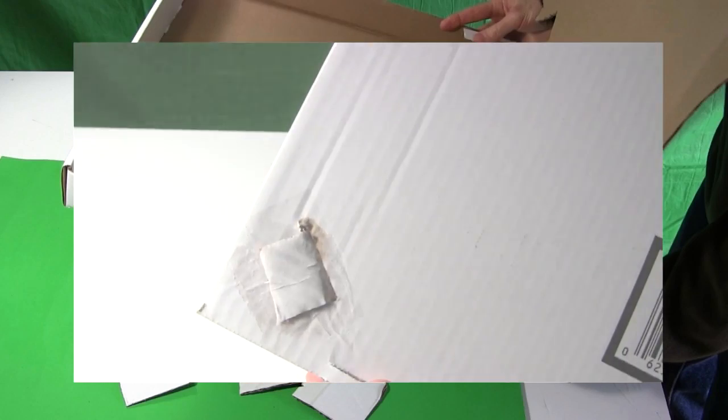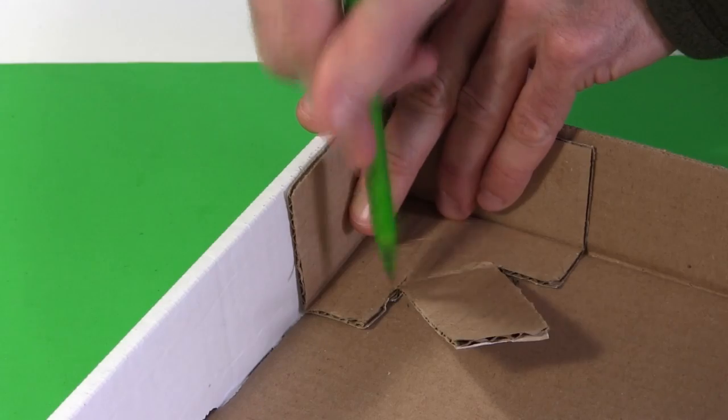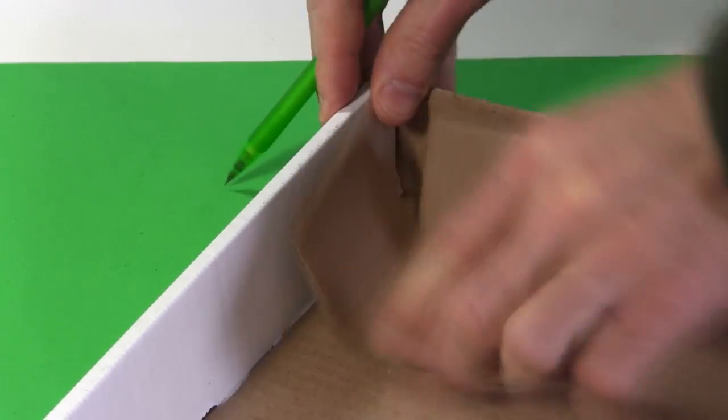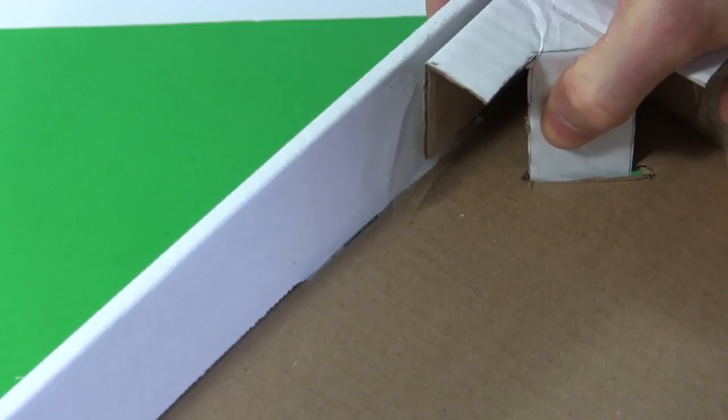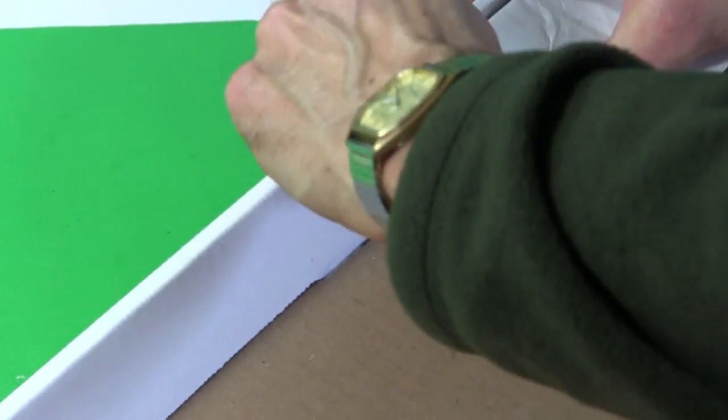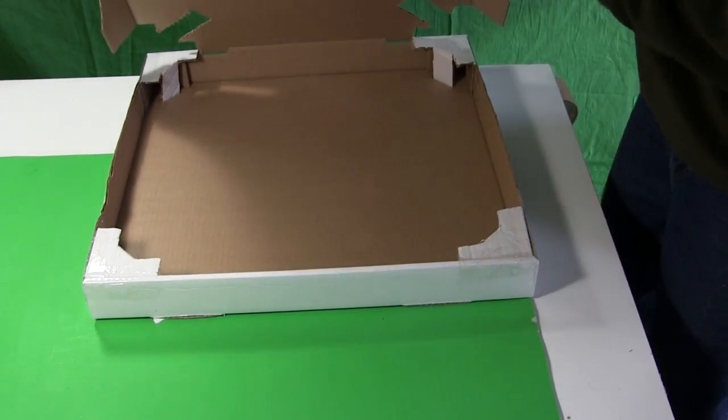Next we need to make slots for this piece to go through the box. First use one of the pieces to mark where the slot should go for all four corners and then cut them. And then tape the pieces in place. And there's the finished box.